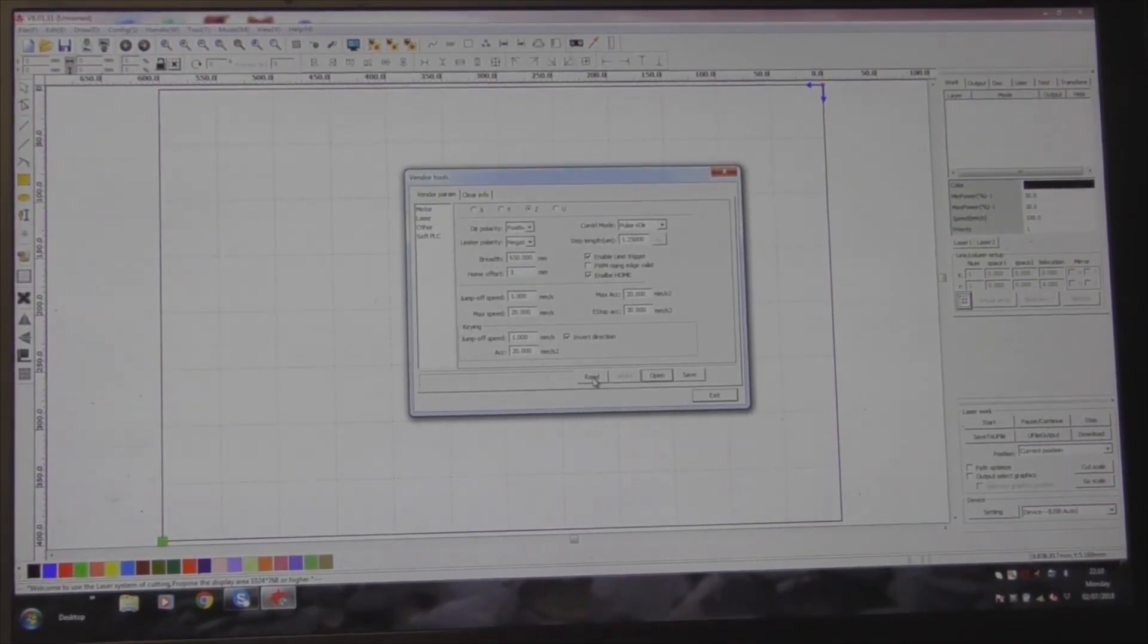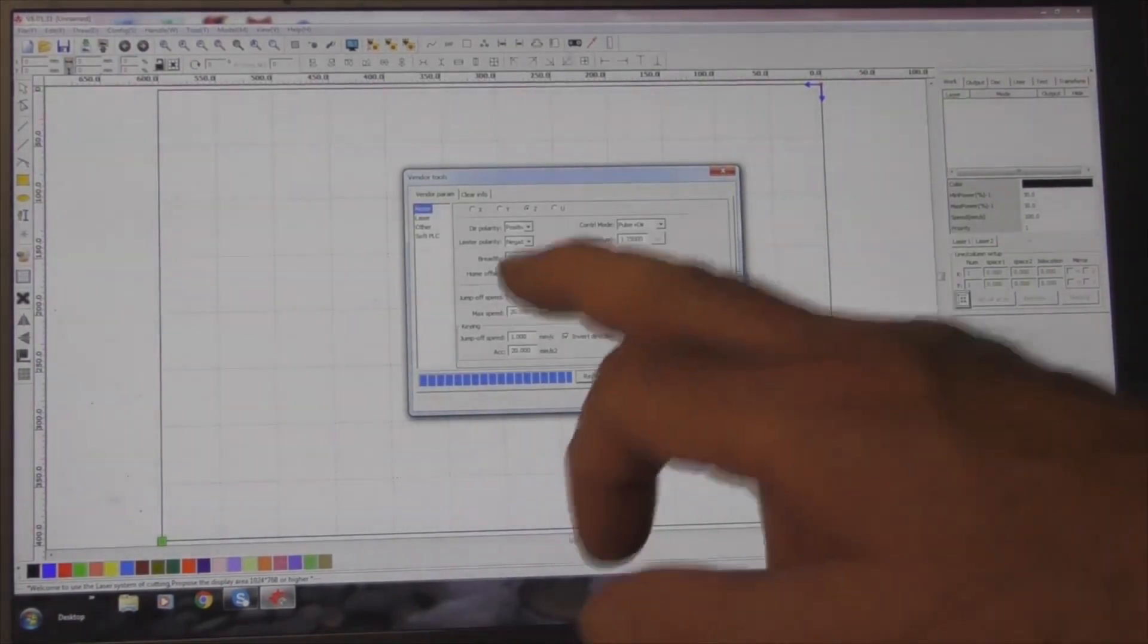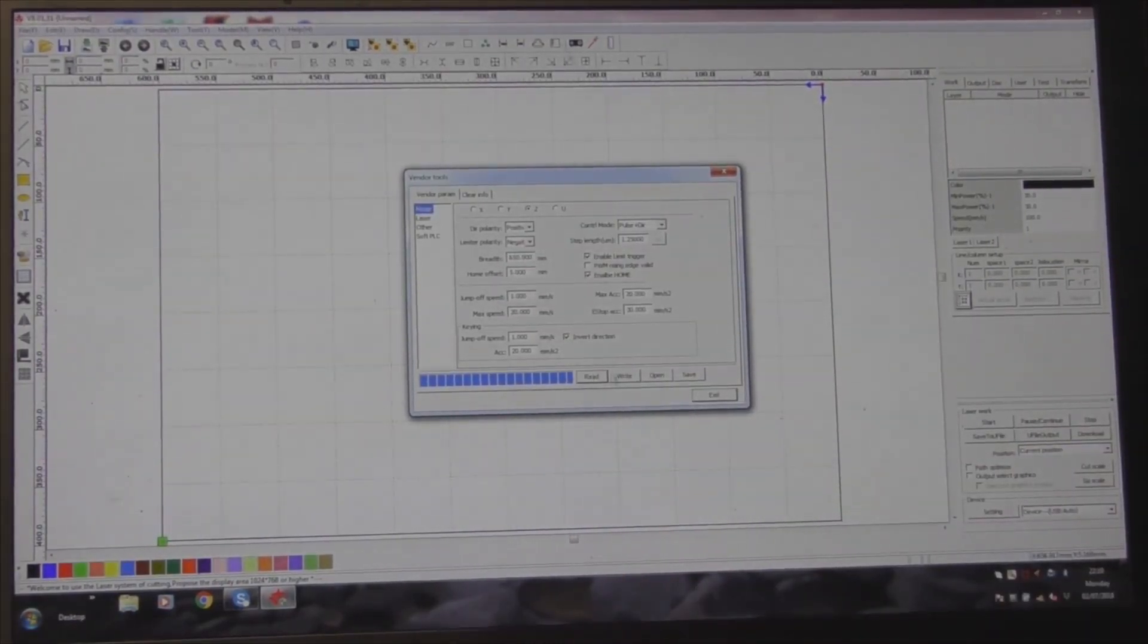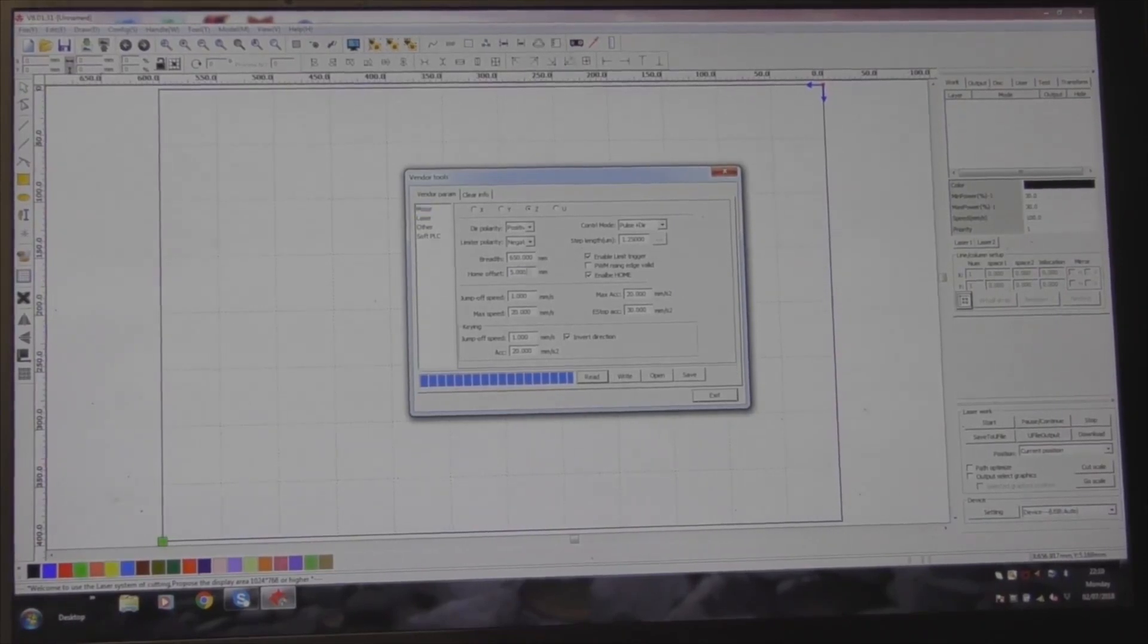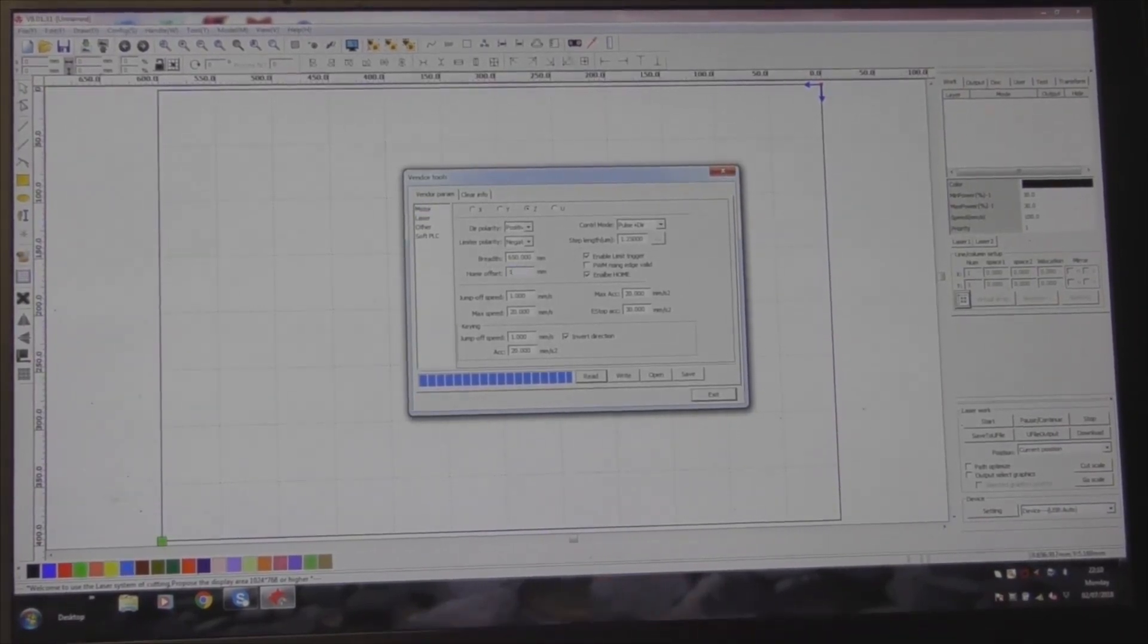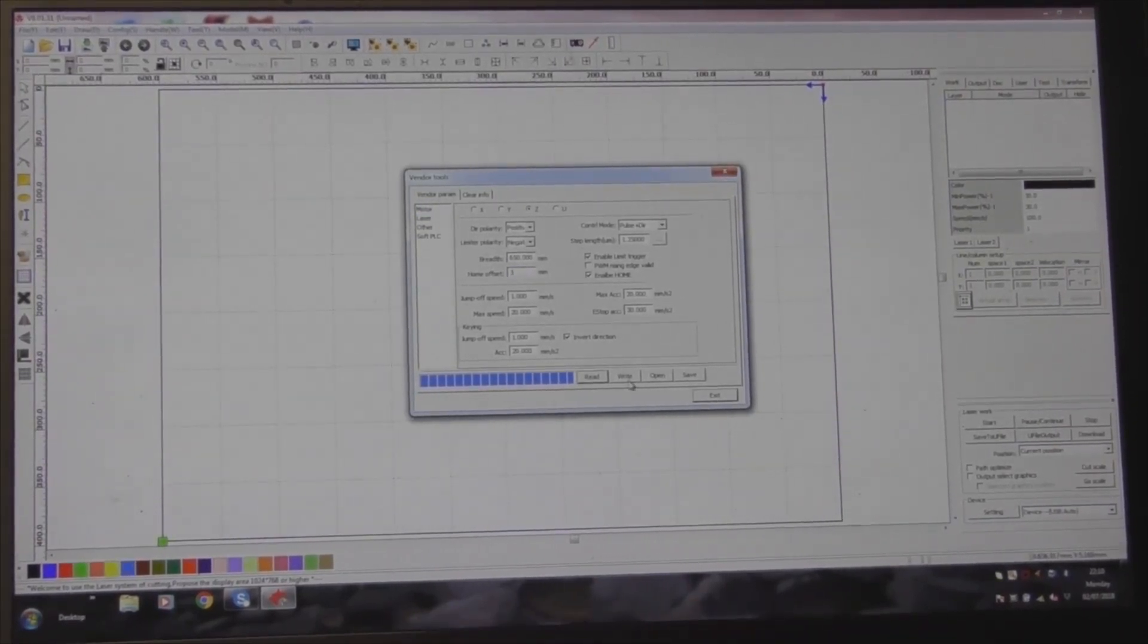Now before I can do that adjustment, I've got to read what's in the machine already. What's in the machine already is five millimetres. Now I can change it to three and then I can write that back to the machine.